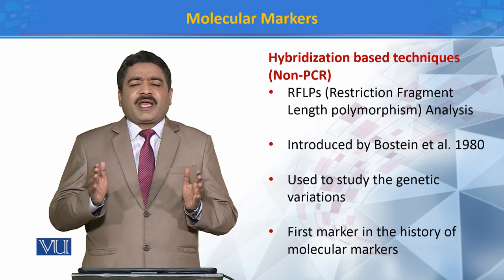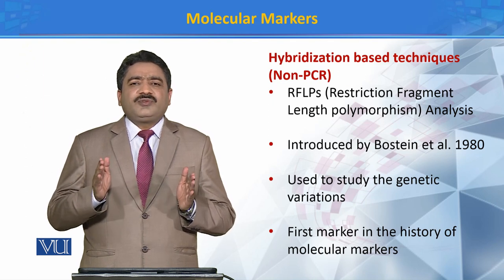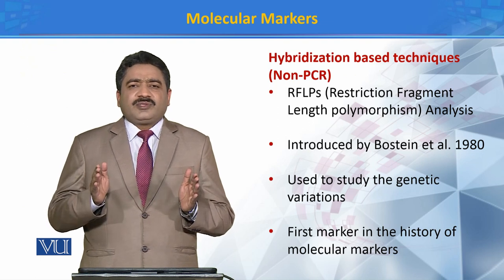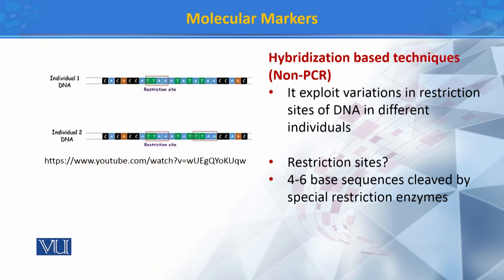RFLPs کے بارے میں یہ کہا جاتا ہے کہ آج کل جتنے بھی مختلف قسم کے molecular markers use ہو رہے ہیں، ان میں سے پہلا marker یہی تھا۔ اس technique کے اندر ہم restriction sites کے اندر variations کو exploit کرتے ہیں — یعنی ہم مختلف organisms کے DNA کے اندر جو restriction sites ہوتی ہیں، ان کو compare کرتے ہیں۔